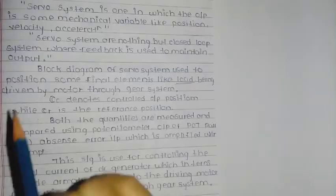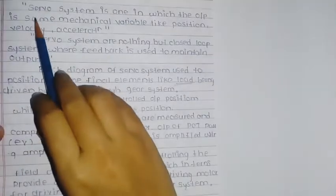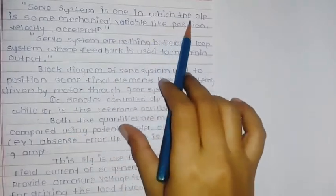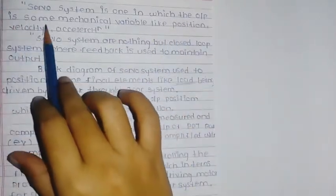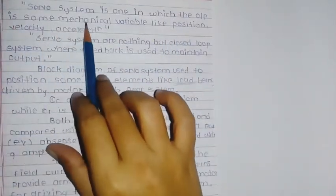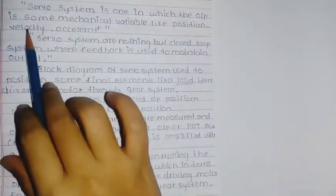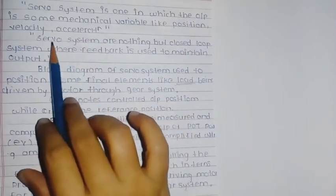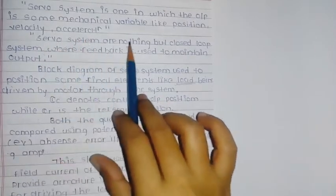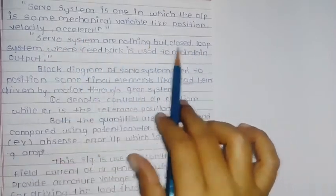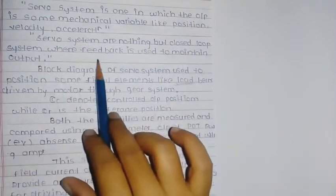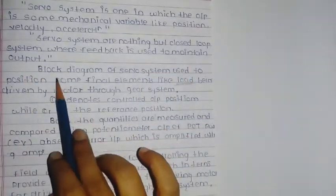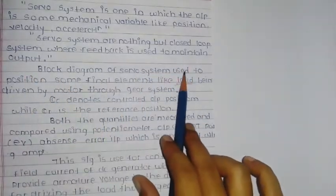To revise: the servo system is one in which the output is a mechanical variable like position, velocity, or acceleration. Servo systems are nothing but closed loop systems where feedback is used to maintain the output.